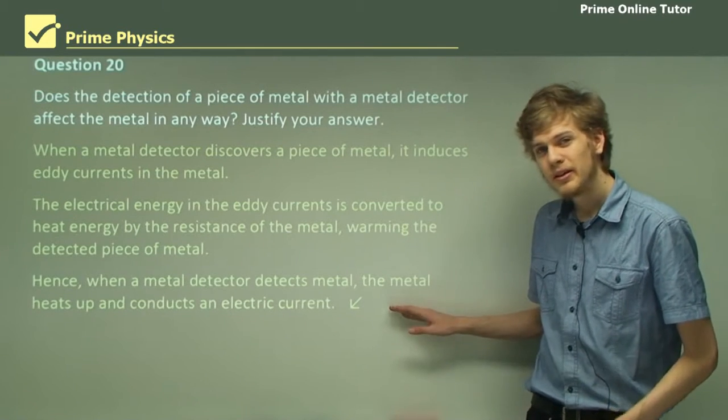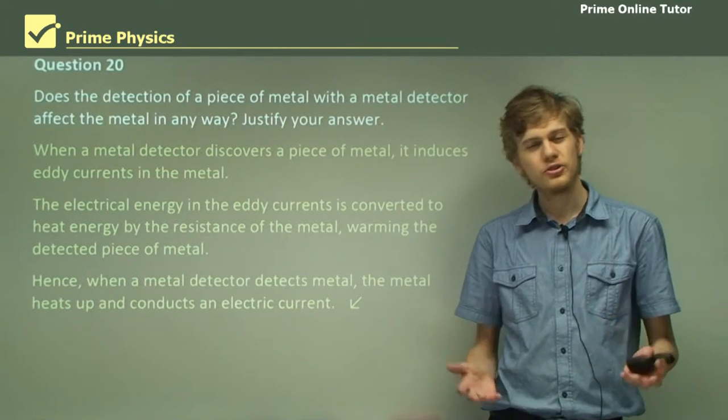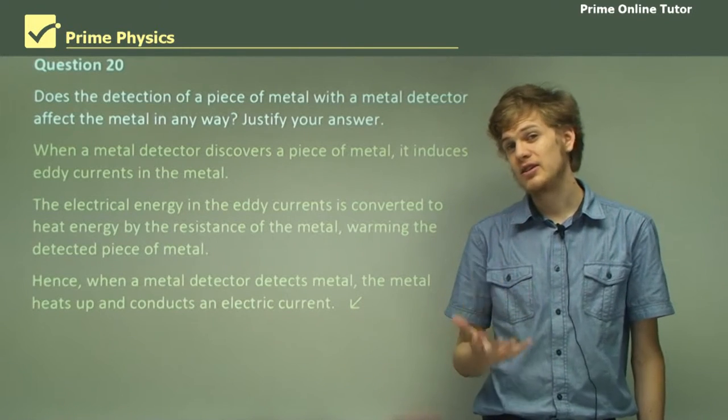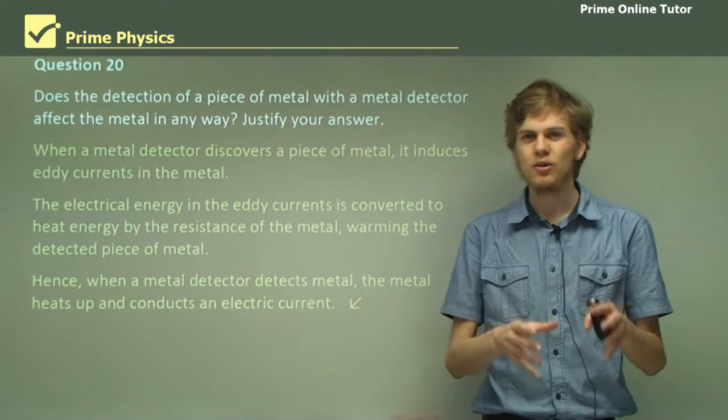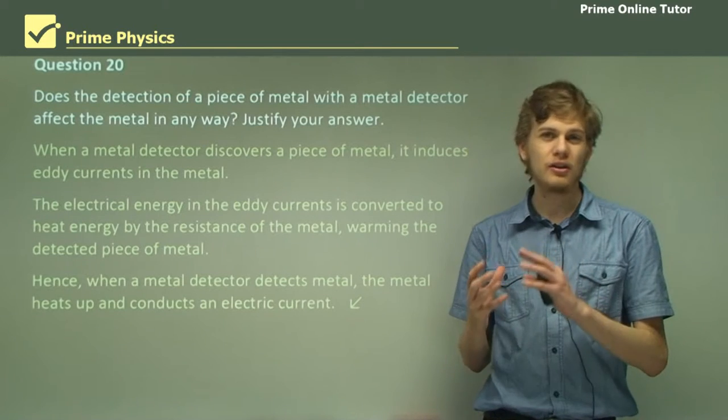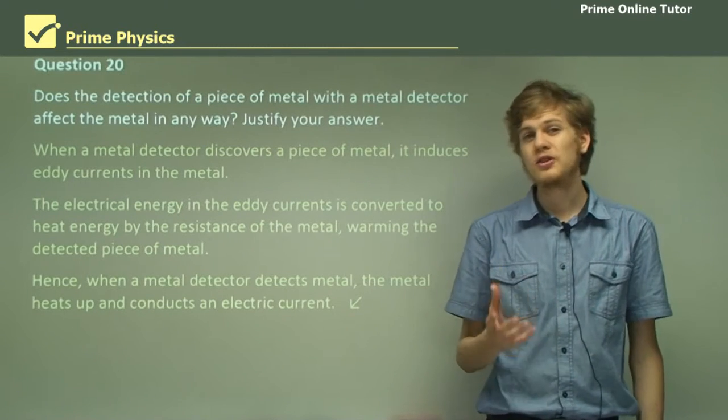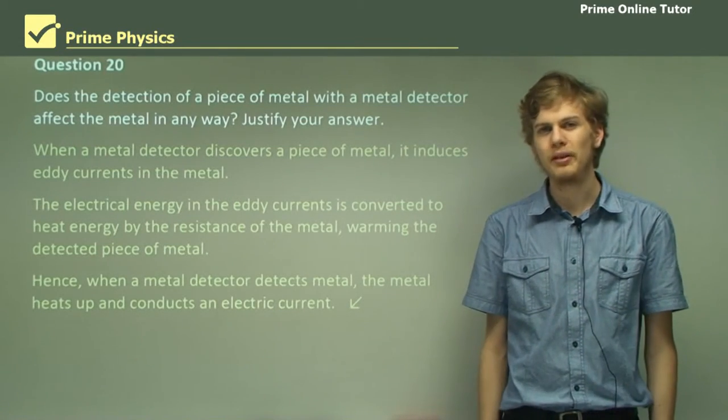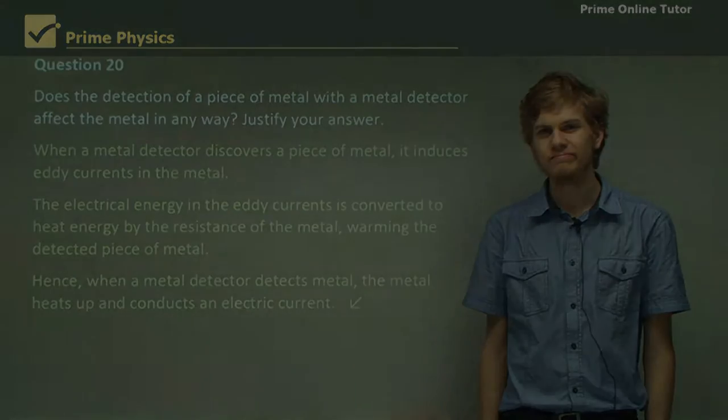That's the end of the questions, which means we've finished the last uses of eddy currents that we'll be looking at. We've learned about how we can detect metal by inducing eddy currents in it and measuring the changes in magnetic field, and inspect metal by measuring how eddy currents change through various pieces of metal.